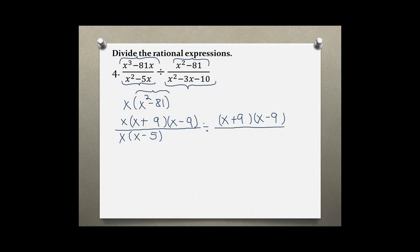The bottom one is a trinomial with a coefficient of 1. We use the factoring method: write two empty sets of parentheses, square root the first term — x and x — bring down the first sign, which is minus. Multiplying the two signs together gives a plus, because negative times negative is positive. Then find factors of 10 that subtract to give the middle number, which is 3. The factors of 10 that subtract to give 3 are 5 and 2, because 5 minus 2 is 3. The larger one always goes first, so the signs match. And I am done factoring.